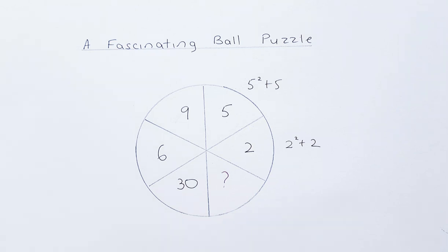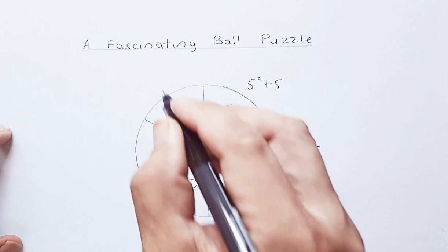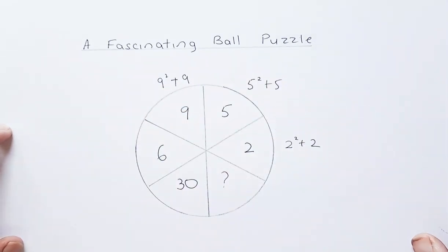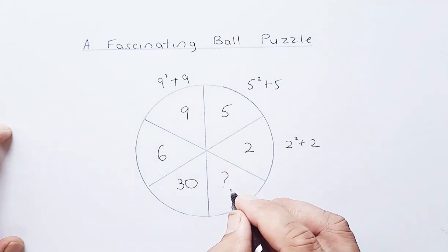In our case, for 9 and the question mark, we give 9 squared plus 9. So 9 squared is 81, 81 plus 9. The question mark will be 90.